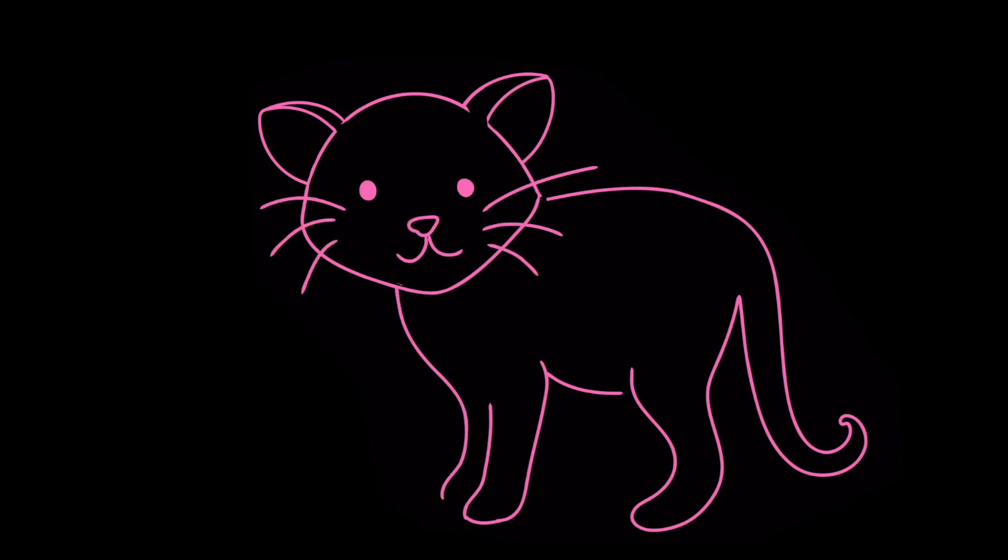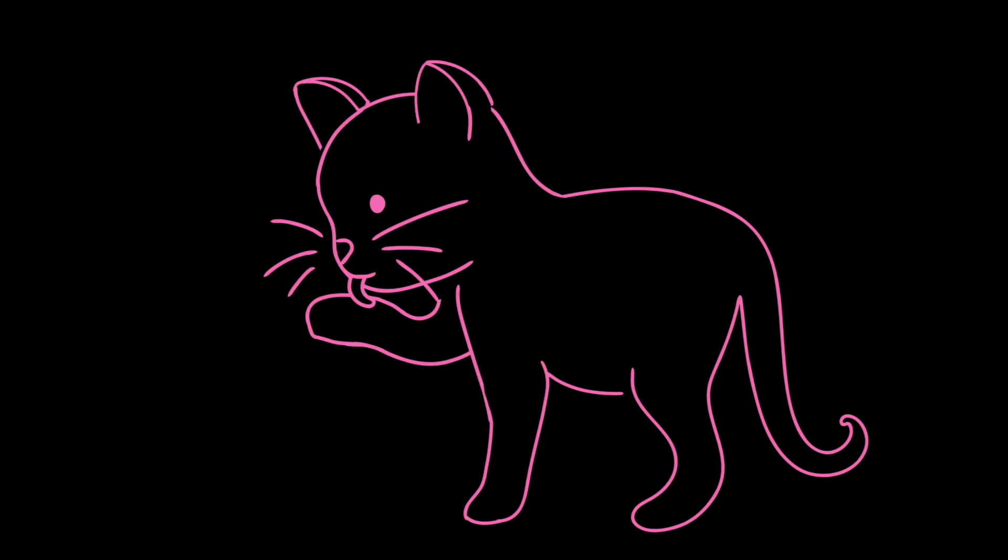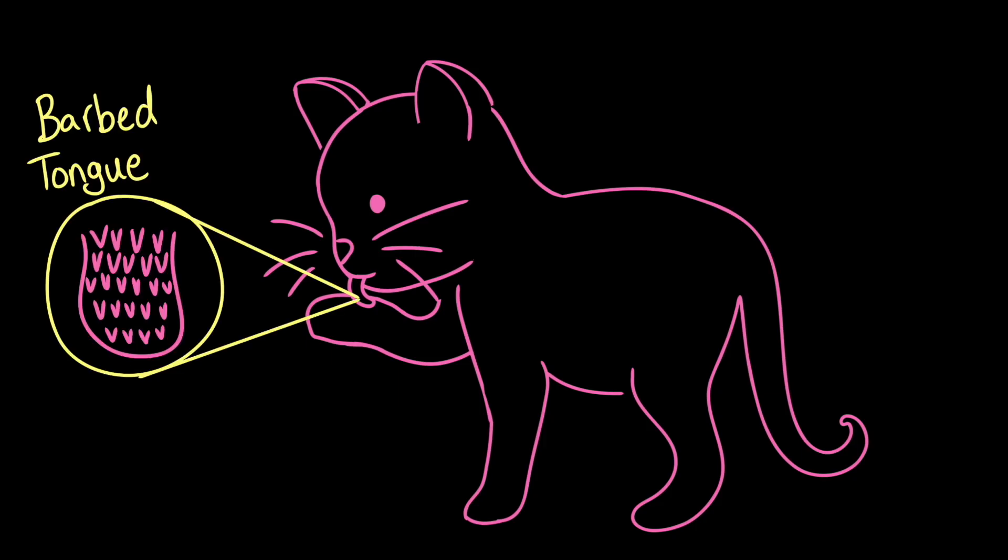This is my cat, Rubix. One of the many amazing things about Rubix is that he naturally works to keep himself clean. His barbed tongue is really good at getting rid of the dust and dirt that he gets in his fur every day.